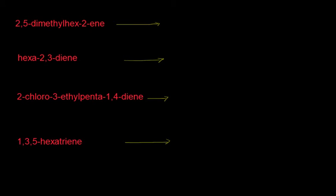Writing structures with the help of IUPAC names is again interesting in organic chemistry. We have four examples, and from these IUPAC names we have to write the structures of the molecules. Here we have 2,5-dimethyl-hex-2-ene.